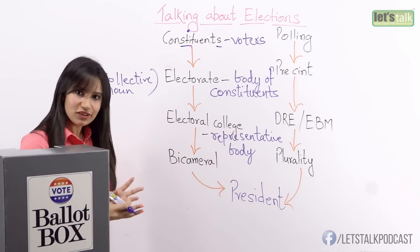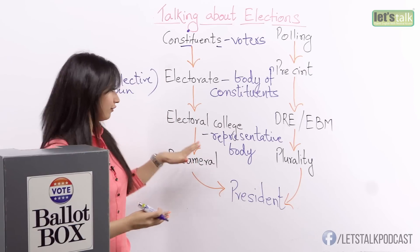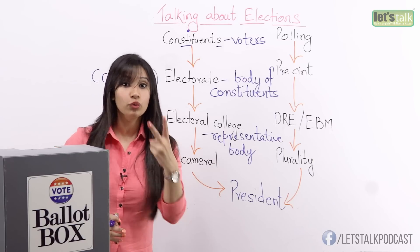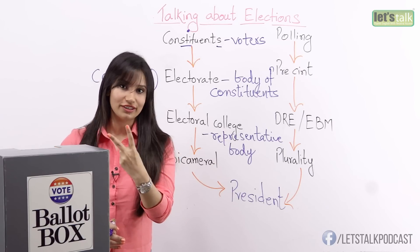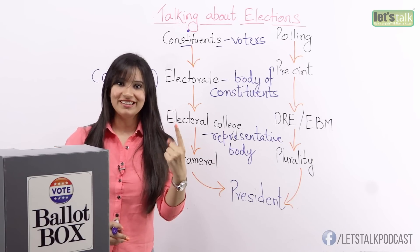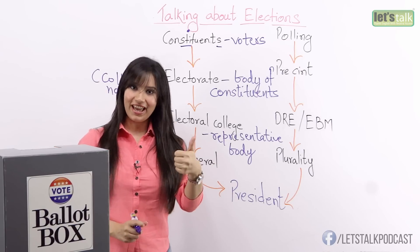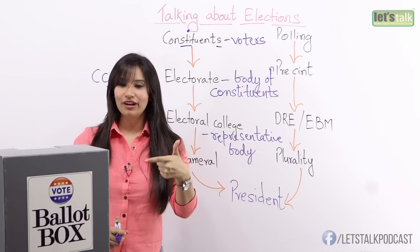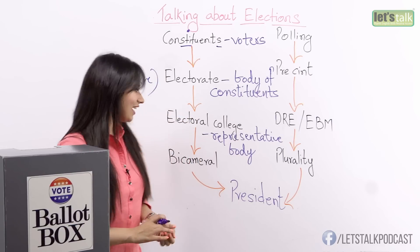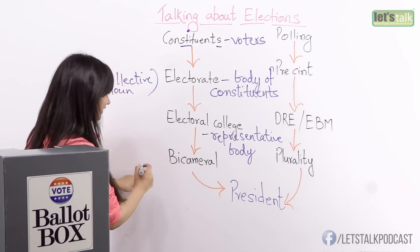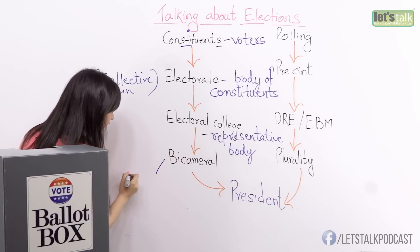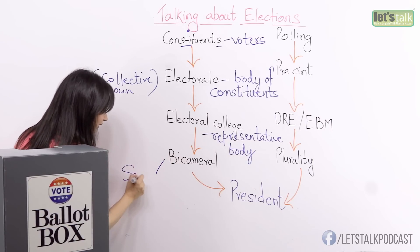This body of electoral college is divided into two parts. The first part is the Senate and the second part is the House of Representatives.